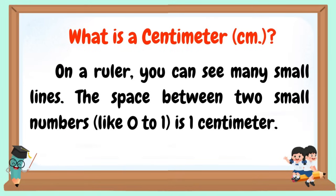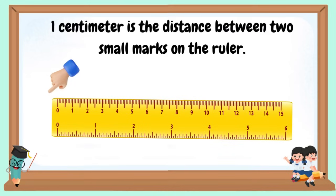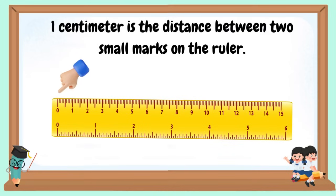On a ruler, you can see many small lines. The space between two small numbers like 0 to 1 is 1 cm. This is the centimeter side of the ruler. One cm is the distance between two small marks on the ruler.